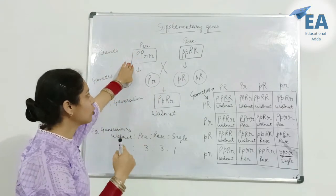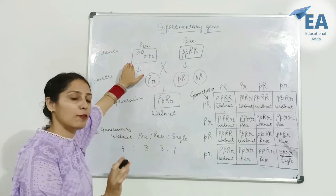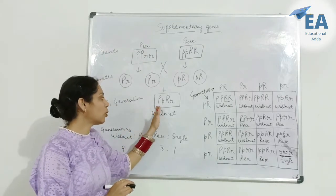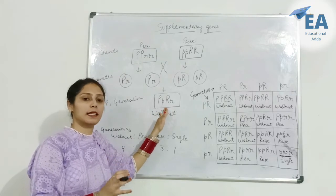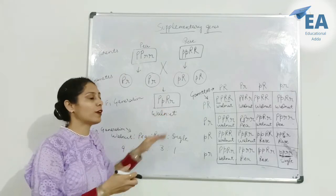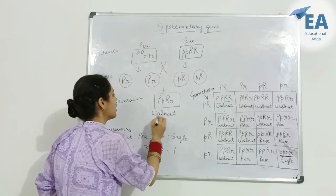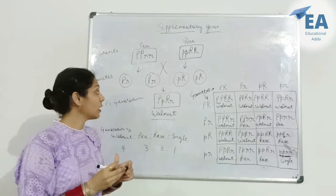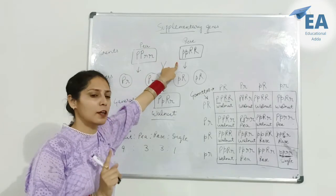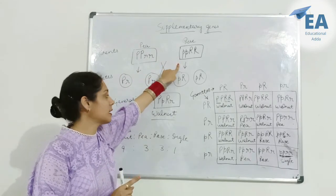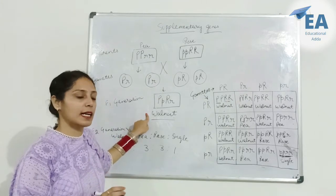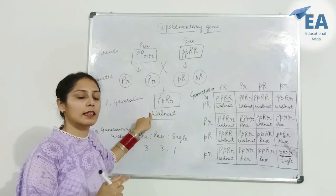When each gene is present independently, they show their own effects. But when these two dominant genes P and R are present together, they show a new effect — that is walnut. These are supplementary genes, which show independently different effects, and when present together in dominant form, they produce a new trait.